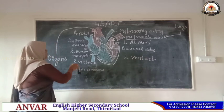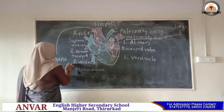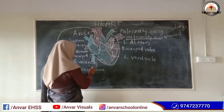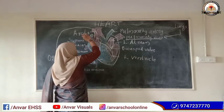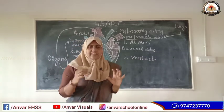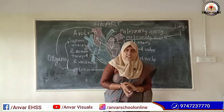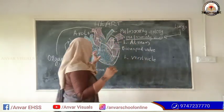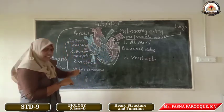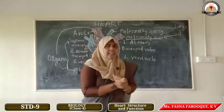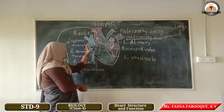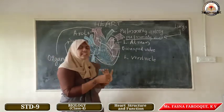The deoxygenated blood returns to the heart through the superior and inferior vena cava, reaching the right atrium. Now the right atrium is filled with deoxygenated blood. The right atrium contracts and the blood flows to the right ventricle through the tricuspid valve. Then the right atrium relaxes and the right ventricle is filled with blood.